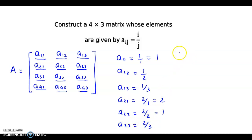Next, 3rd row key elements: A₃₁ will be 3 by 1, that is equal to 3. A₃₂ will be 3 by 2. A₃₃ will be 3 by 3, that is equal to 1.